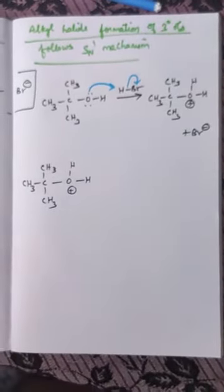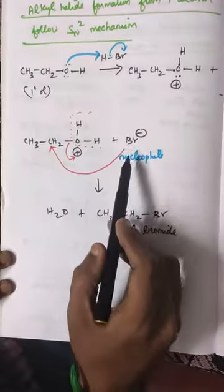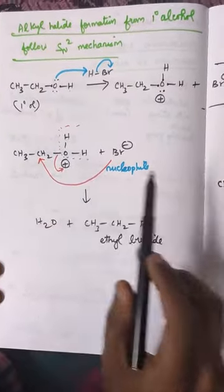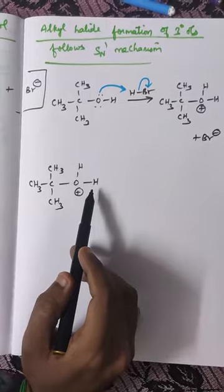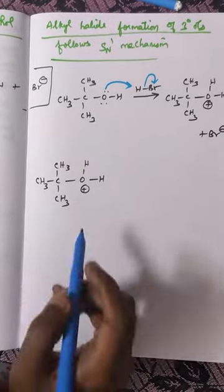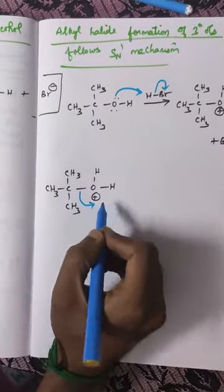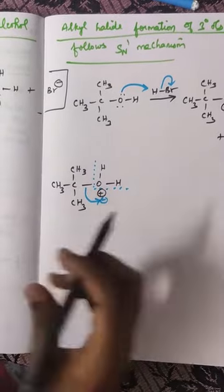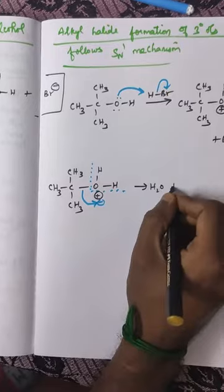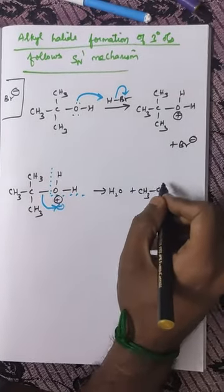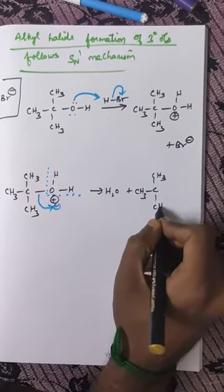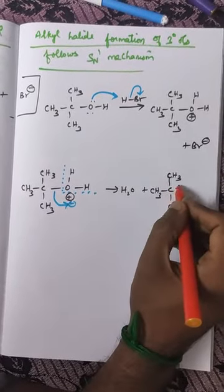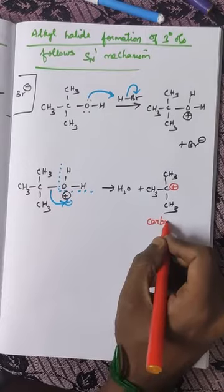In the second step, unlike the SN2 example where bromide ion addition and water elimination happen simultaneously, here the water alone gets eliminated first before the addition of the bromide ion. The bond shifts as a negative charge, cancelling the positive, and water is eliminated. The remaining part is (CH3)3C⁺. Since carbon normally must have four bonds but now has only three, a positive charge is created — this is called a carbocation.